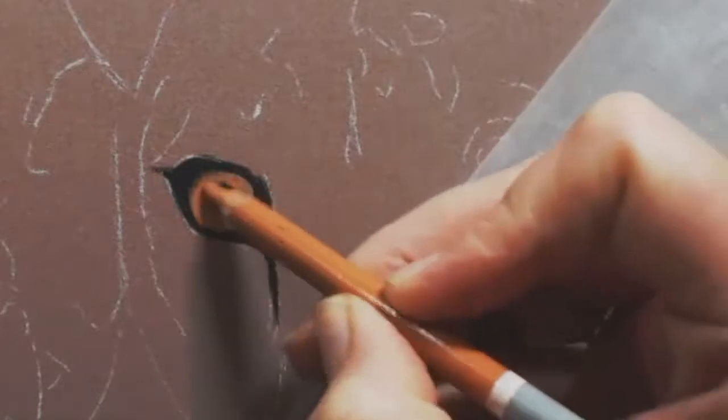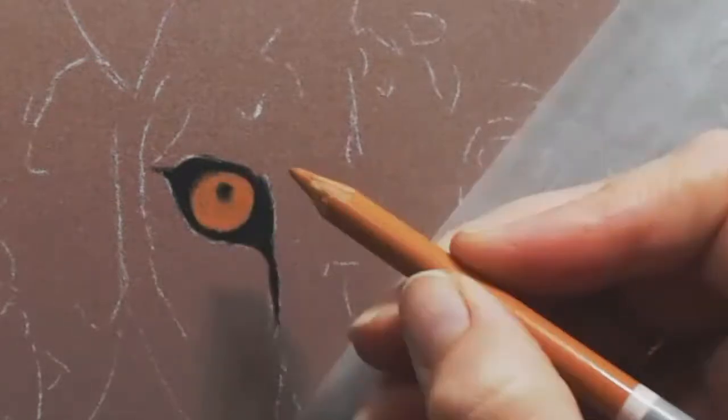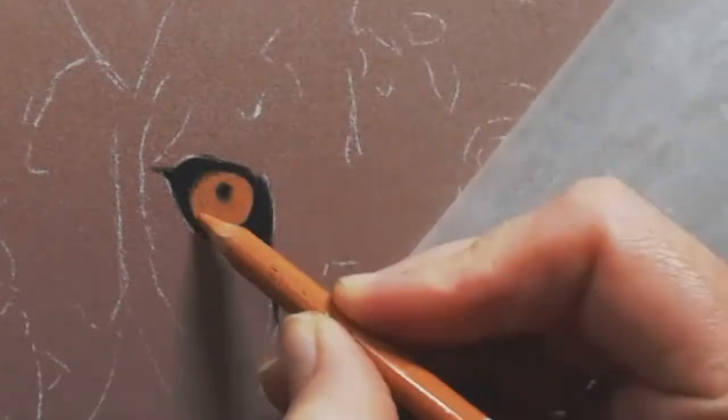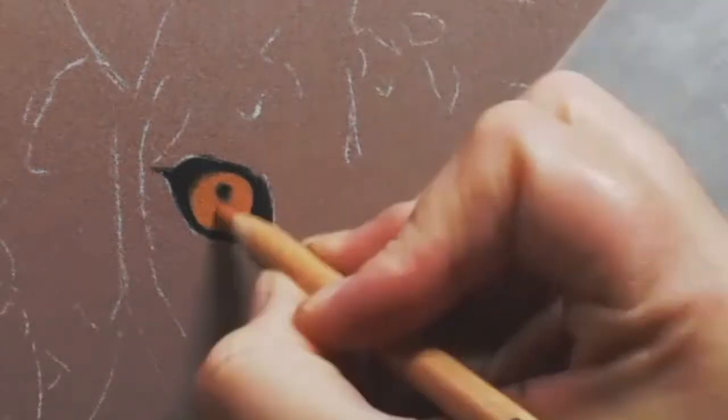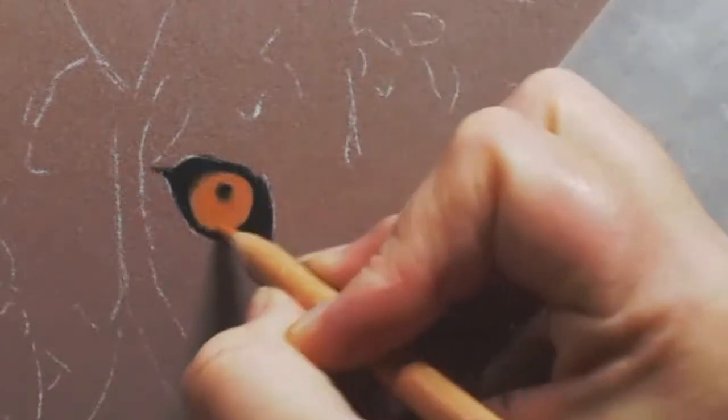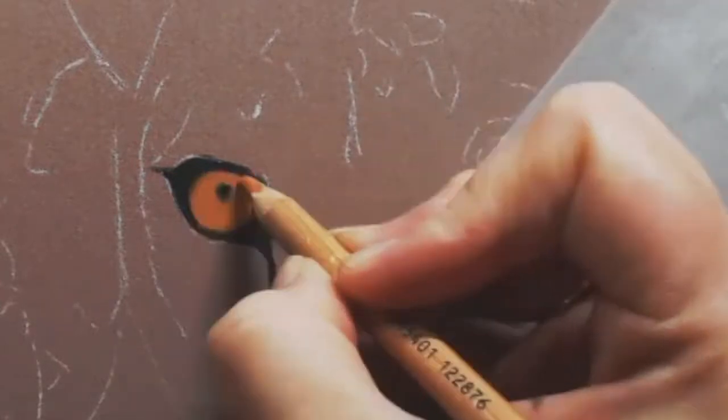Now I'm using a Carbothello, an orange color, just to apply a base. And then I go in with a Pitt Pastel pencil afterwards, which is just that much more vibrant orange, because these cheetah's eyes were capturing a lot of color. They were very, very rich in color, very deep.